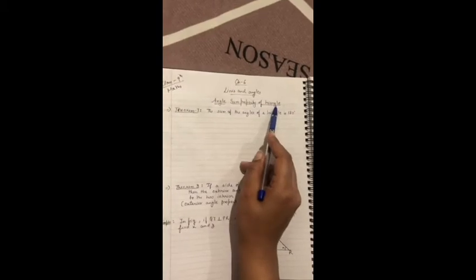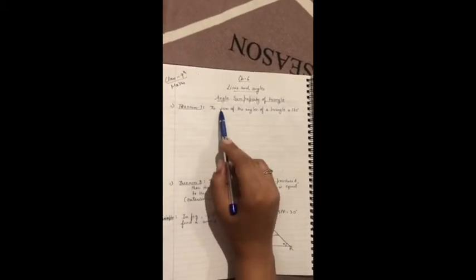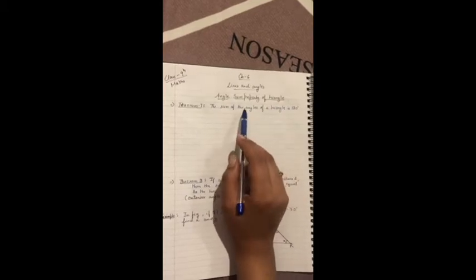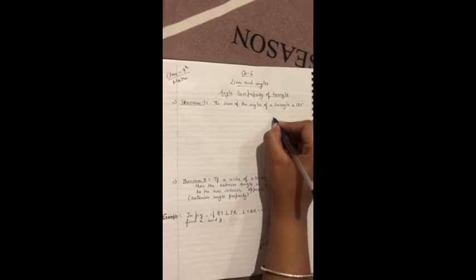Angle sum property of triangle. The theorem is the sum of the angles of a triangle is 180 degree. That means triangle ke tino angles ka sum 180 degree hota hai. Now I am making the figure.